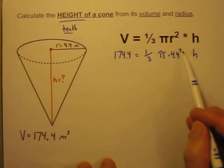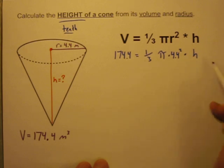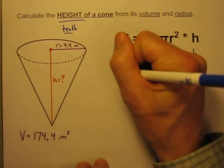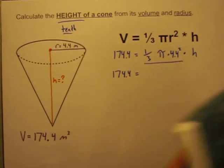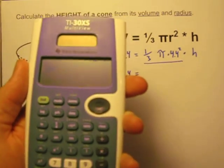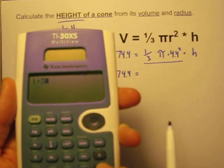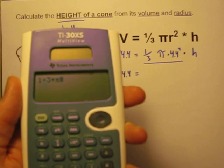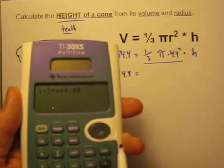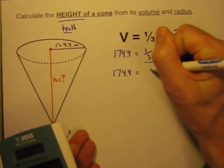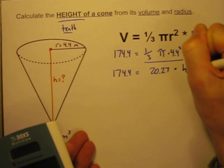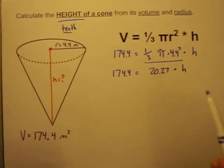What we've got is: volume equals these four terms multiplied together — one third times pi times 4.4 squared times h. Let's simplify by calculating what one third times pi times 4.4 squared equals first. So I'll have 174.4 equal to those three things multiplied together times h. On my calculator I'll do 1 divided by 3, times pi — using the pi key — times 4.4 squared, and I get 20.27. So this becomes 20.27 times h. I rounded that to the nearest hundredth.